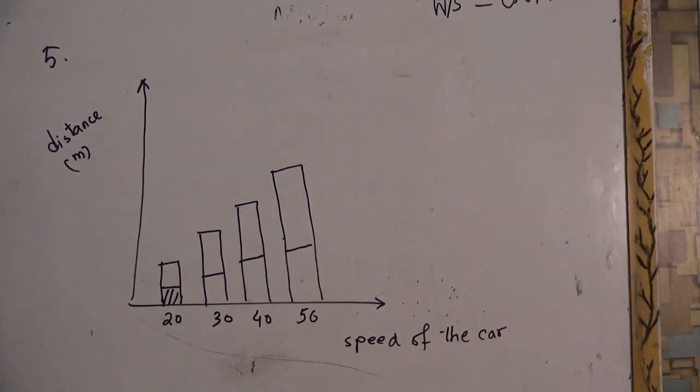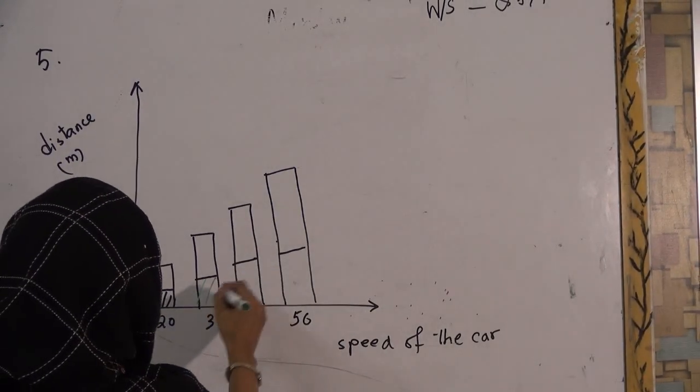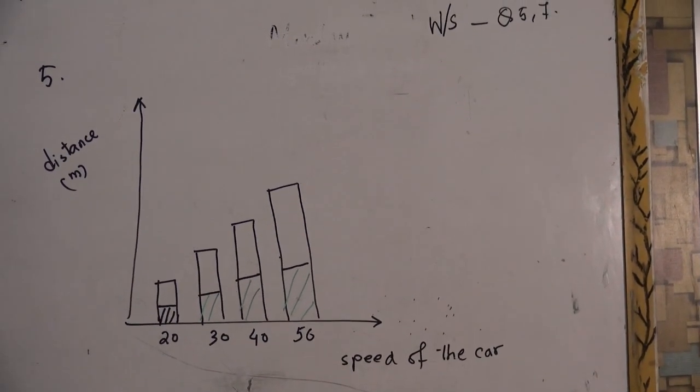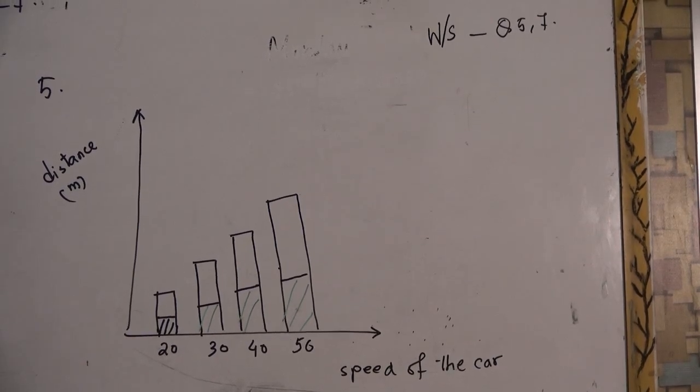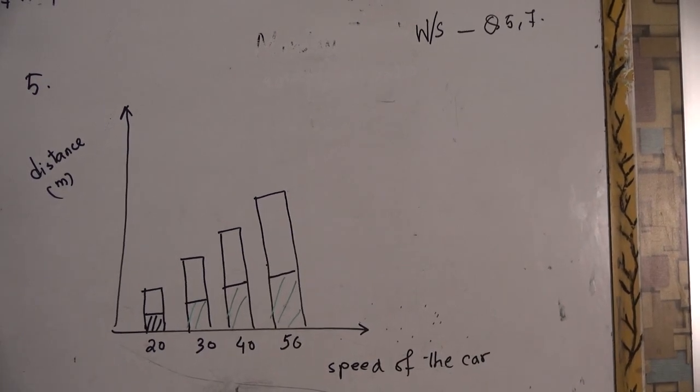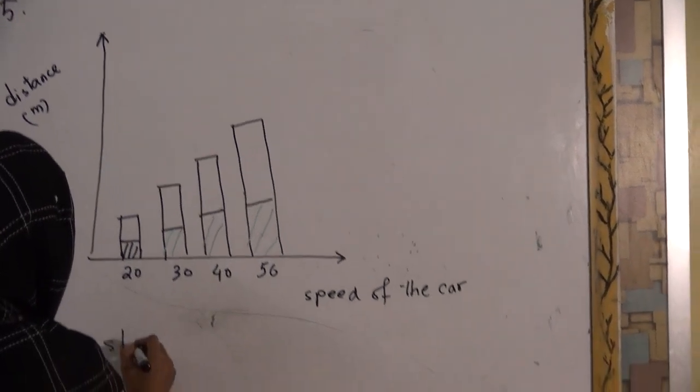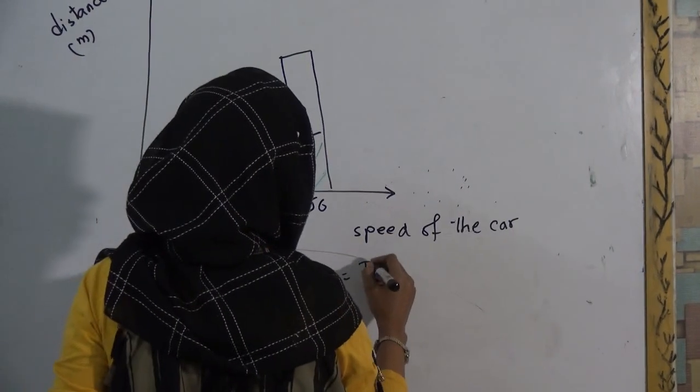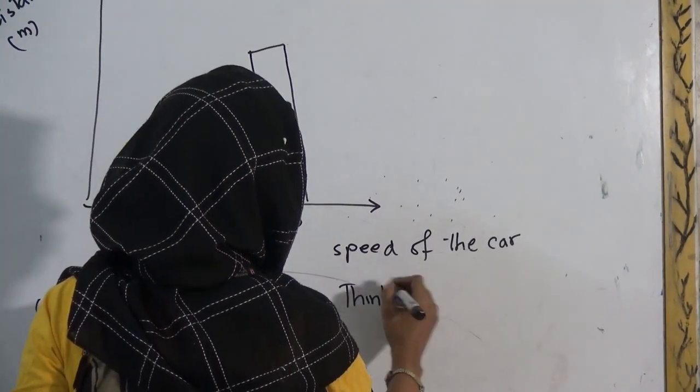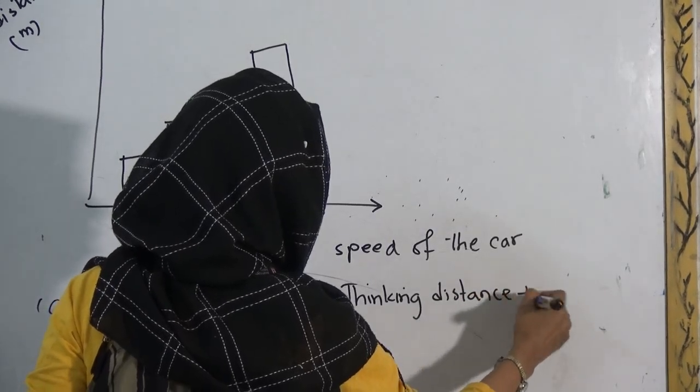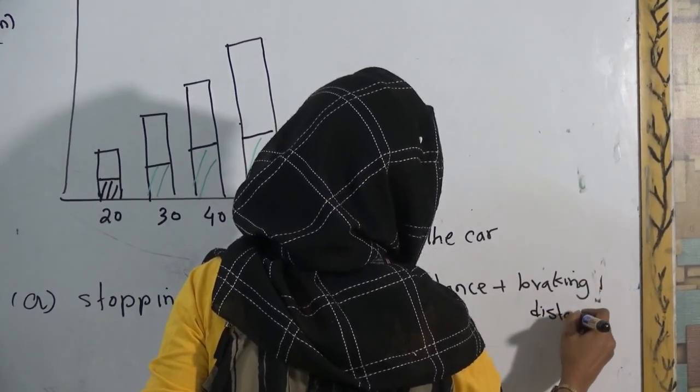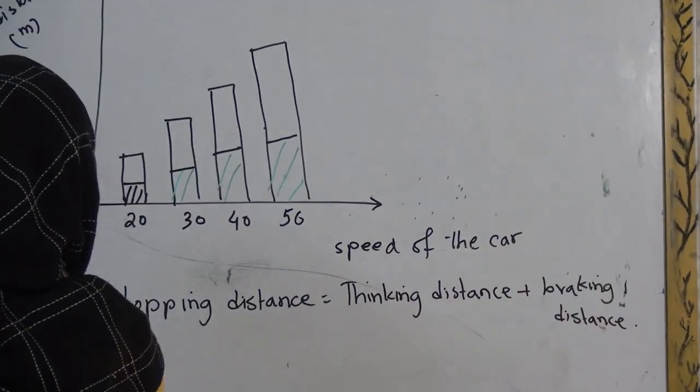Let me put a color so that you can understand it clearly. The black one is thinking distance and the white one is braking distance. So the first question asked you, complete the equation to show the link between stopping distance, thinking distance, and braking distance. For answer of A, stopping distance equals to thinking distance plus braking distance. All right.